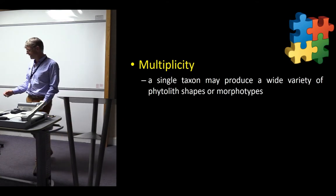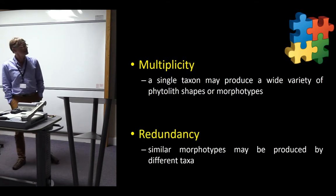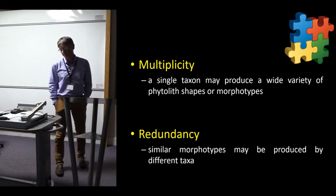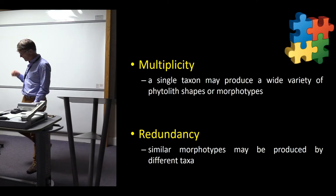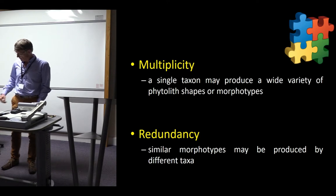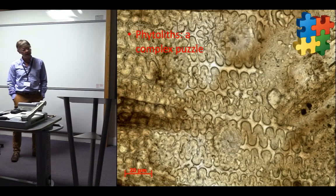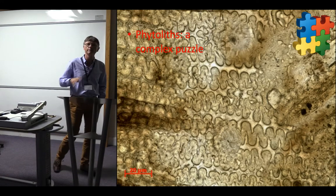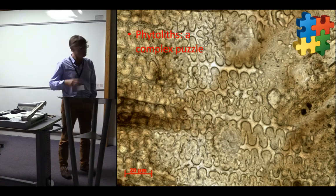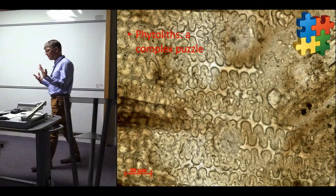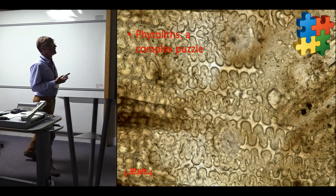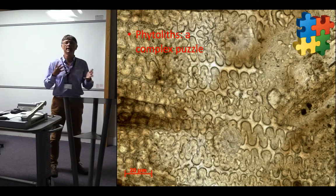Another aspect of phytolith analysis is that some types of phytolith can be produced by related and unrelated plant taxa, and this is known as redundancy. To make things quite simple, phytoliths look like a kind of puzzle which can be made of different types of phytoliths, and basically the major challenge is to reconstruct that puzzle. The common practice to do so is to extract the phytolith from the soil and the sediment.